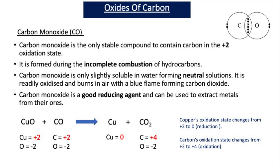The other oxide of carbon is carbon monoxide, the only stable compound to contain carbon in the plus 2 oxidation state. It is a much less stable oxide than carbon dioxide and is formed in the incomplete combustion of hydrocarbons — when a hydrocarbon burns in a poor supply of oxygen. Carbon monoxide is a toxic, poisonous gas that stops red blood cells picking up oxygen. It is only slightly soluble in water and forms neutral solutions, making it an example of a neutral oxide.